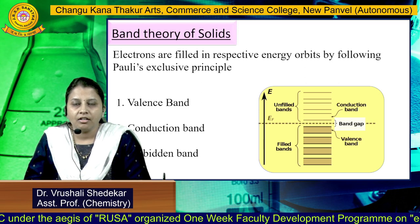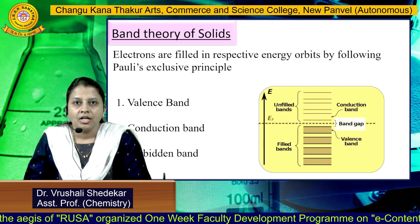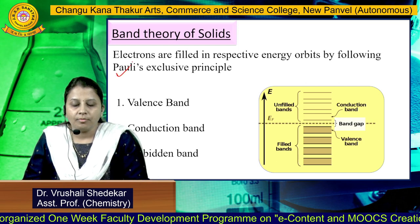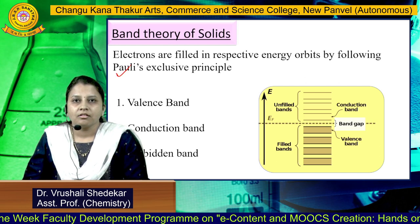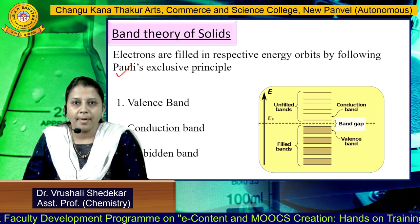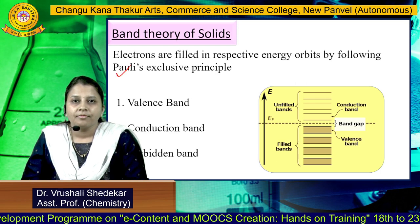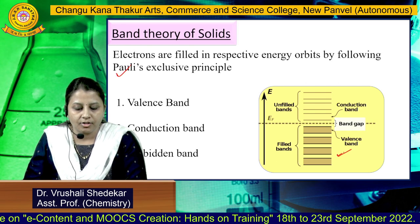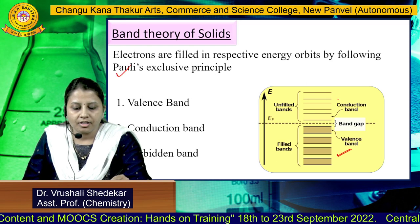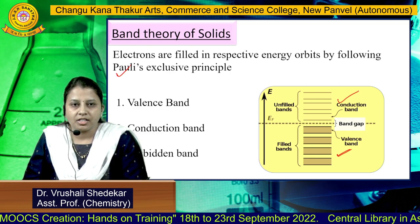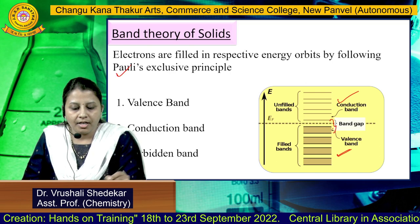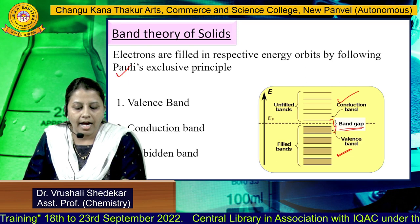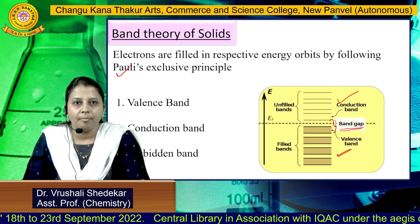Electrons are filled in respective energy orbitals according to the Pauli exclusion principle. A number of bands are confined in a small space, so they appear like a band. A completely filled band or a partially filled band is a valence band, and the conduction band is almost empty or partially filled. The band that appears between the valence band and conduction band is also called the forbidden gap or band gap of a particular material.